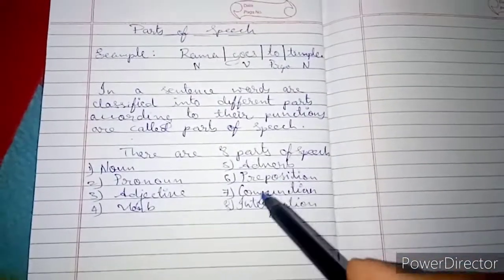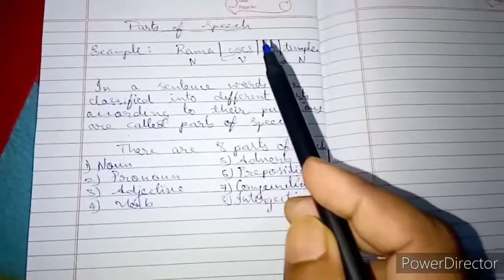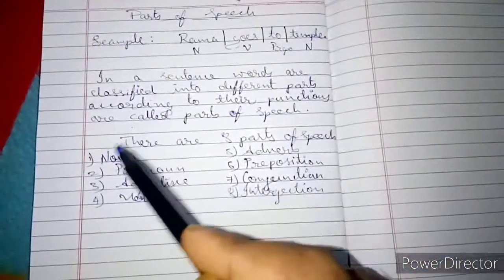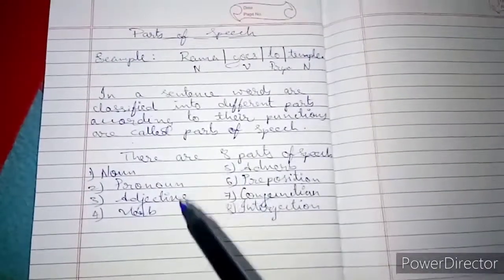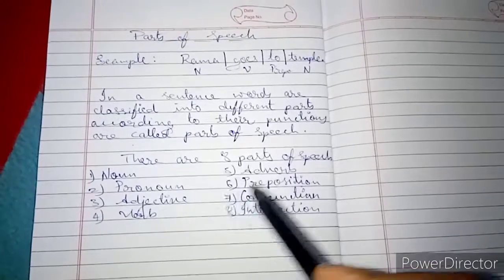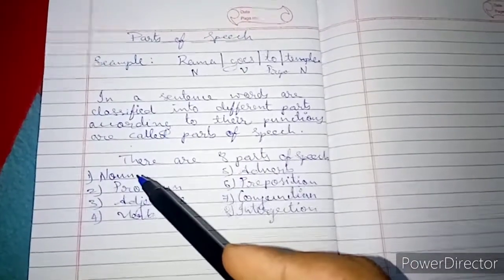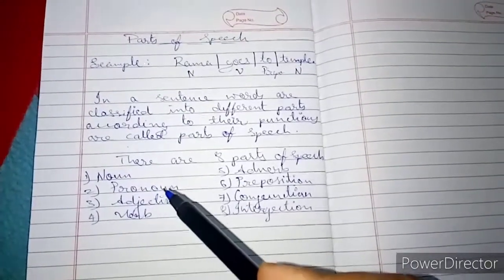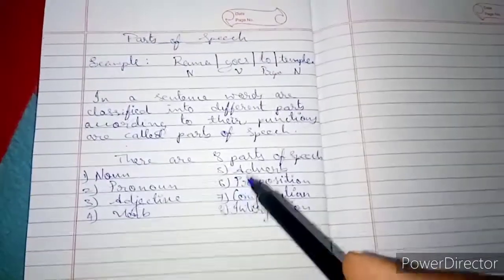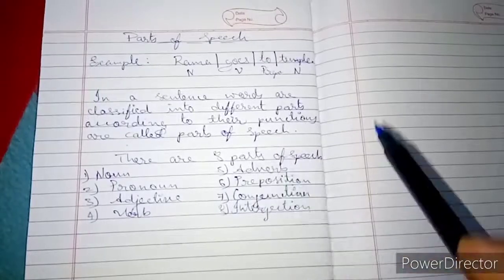Okay, so my dear friends, now you have learned what is the definition of parts of speech, and there are eight parts of speech in English grammar. Next, we will learn one by one — what is noun, pronoun, adjective, verb, and like this — one by one. We will meet and learn in the next class. Thank you one and all, and have a nice day.